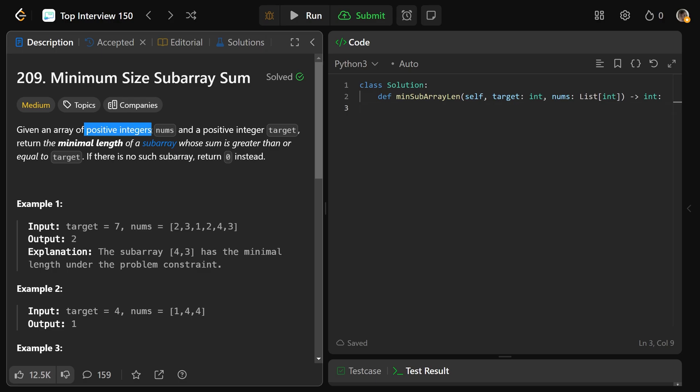So we're given an array of positive integers called nums and another positive integer called target. Now we need to return the minimum length of a subarray whose sum is greater than or equal to the target. And if there's no such subarray, then we need to return zero.